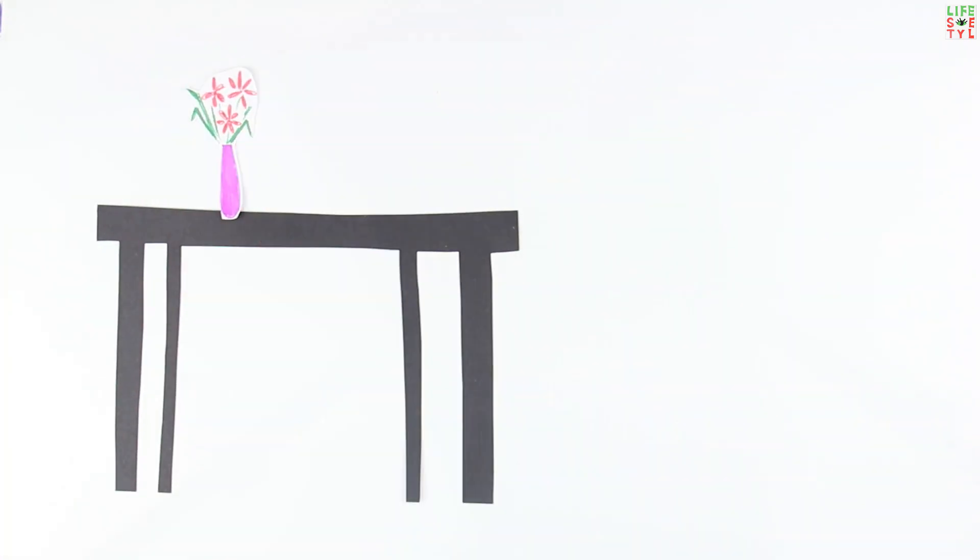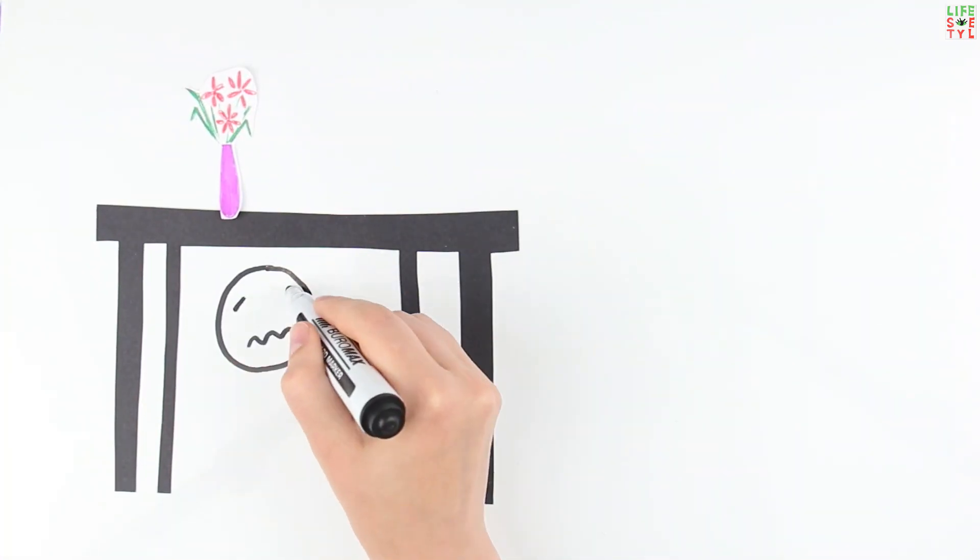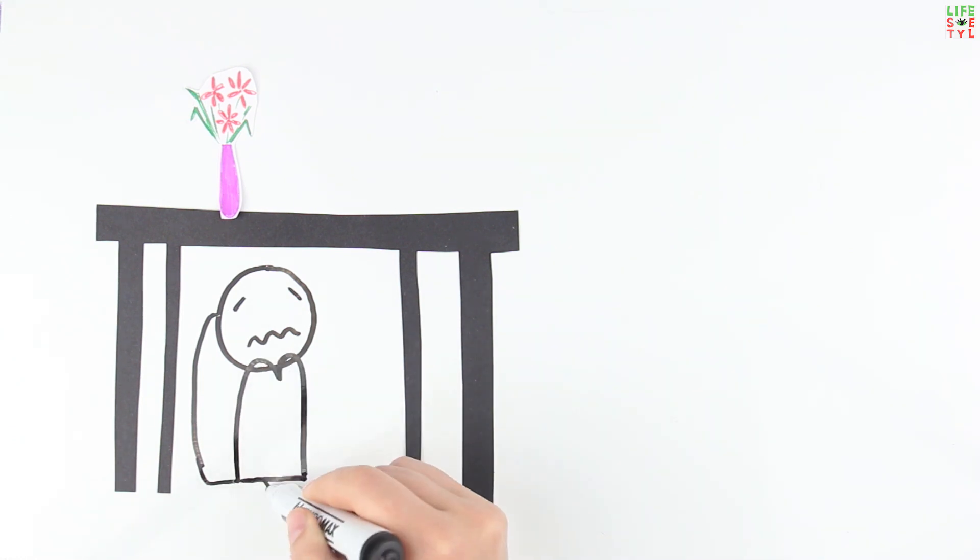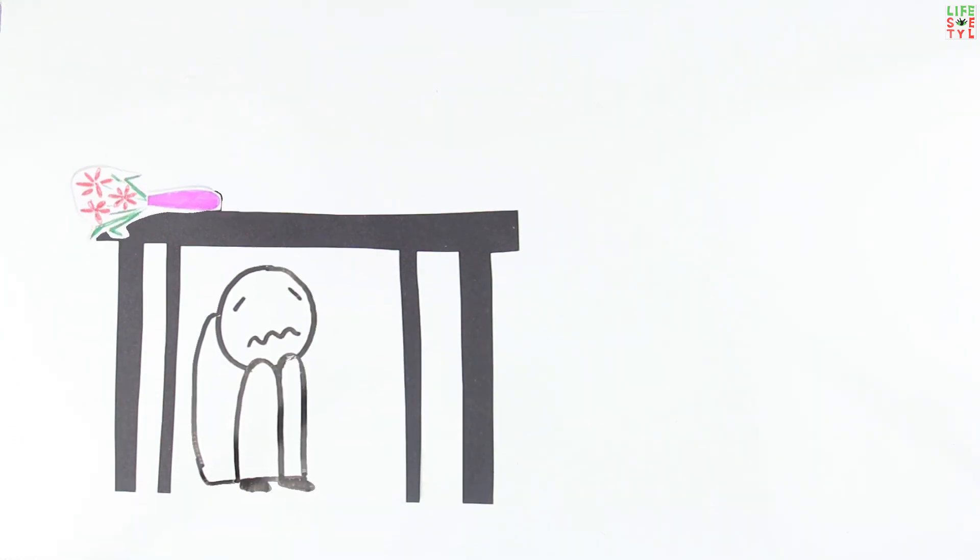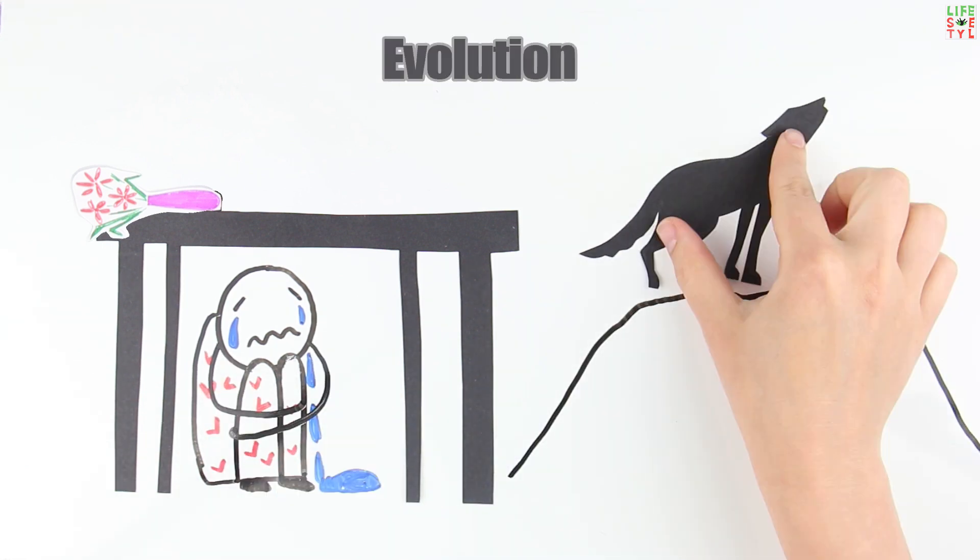Task number three: evolution. Scientists believe that the ability to cry with tears appeared in humans during the process of evolution. Quiet crying does not reveal a person to the enemy, in contrast to the howling and whining inherent of wild animals.